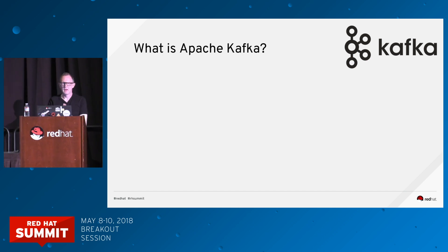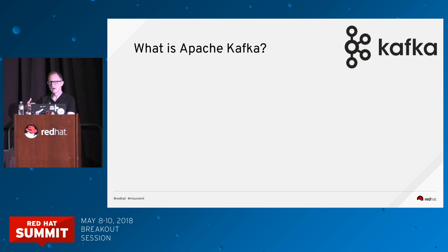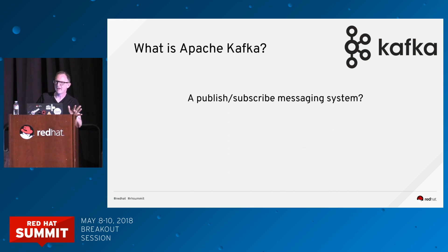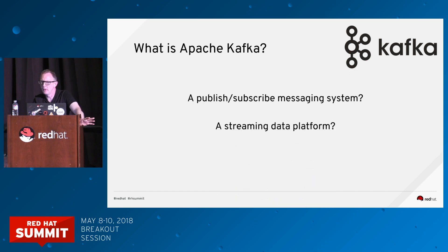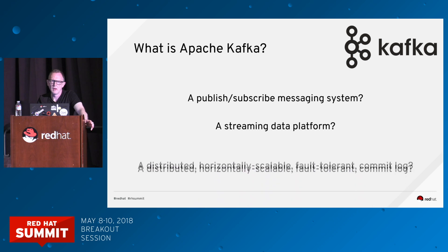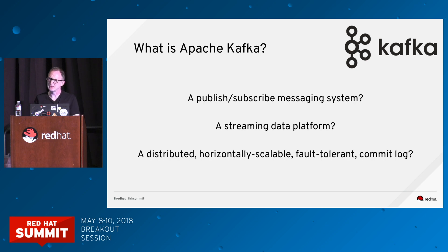For those that don't know what it is, I'm not going to go into a lot of detail, but I'll whiz through the high-level concepts and then show you what we're doing with Kafka on OpenShift with AMQ Streams. People think of Kafka in different ways — as a publish and subscribe messaging system, as a streaming data platform, or more precisely as a distributed, horizontally scalable, fault-tolerant commit log. It's a messaging system, but it differs from traditional messaging systems like AMQ Broker.